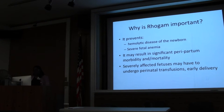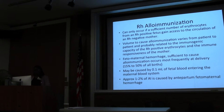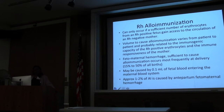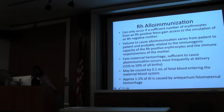Severely affected fetuses may have to undergo perinatal transfusions, early delivery, and extensive monitoring throughout the pregnancy. RH allo-immunization occurs if a sufficient number of erythrocytes from an RH-positive fetus gain access to the circulation of an RH-negative mother. The volume needed is variable and related to the immunogenic capacity of the RH-positive erythrocytes and the immune responsiveness of the mother. Fetal-maternal hemorrhage most often occurs at delivery — 15 to 50% of all births will show fetal blood cells in maternal circulation — but it can be caused by as little as 0.1 mL of fetal blood.